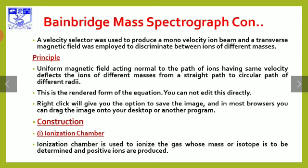A velocity selector was used to produce a mono-velocity ion beam, and a transverse magnetic field was employed to discriminate between ions of different masses. A uniform magnetic field acting normal to the path of ions having the same velocity deflects ions of different masses from a straight-line path to a circular path of different radii.